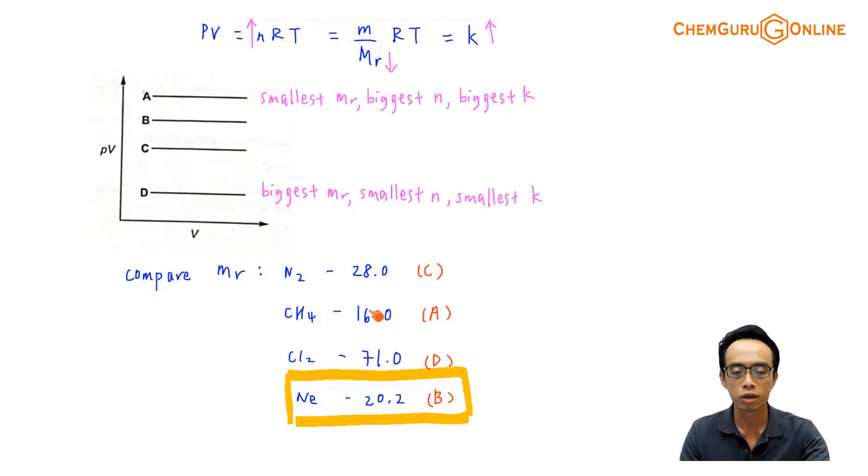Then the next guy with the next bigger MR will be neon, 20.2. So Ne or neon should be B, then followed by nitrogen gas N2, MR is 28.0, so N2 should be gas C. And finally, chlorine with the biggest molar mass, 71.0. So this guy should be D, because D is all the way at the bottom, with the biggest MR, which means that the number of moles should be the smallest, and it should have the smallest NRT, and the lowest, or the smallest, y-intercept K.